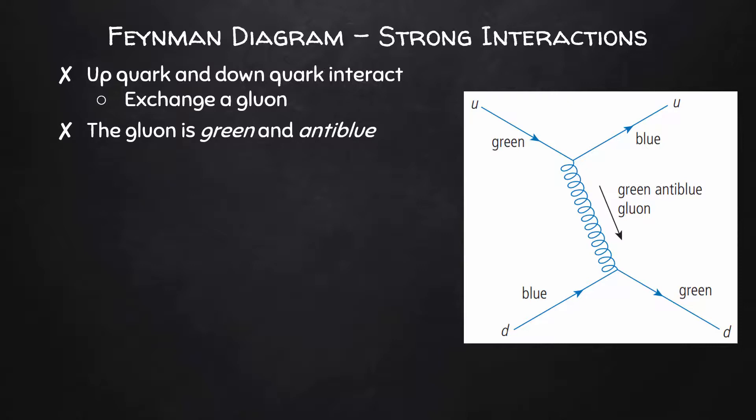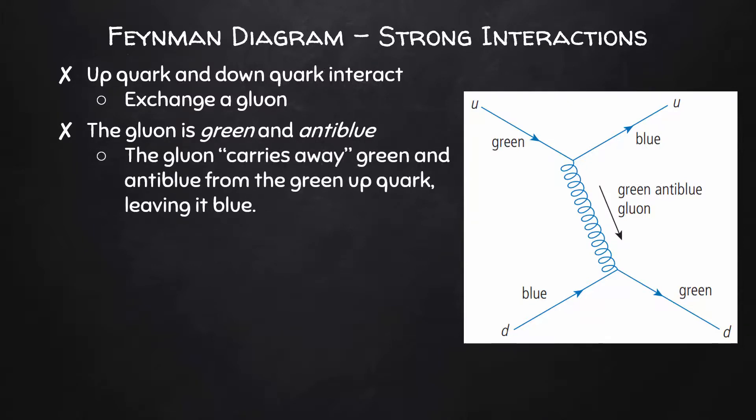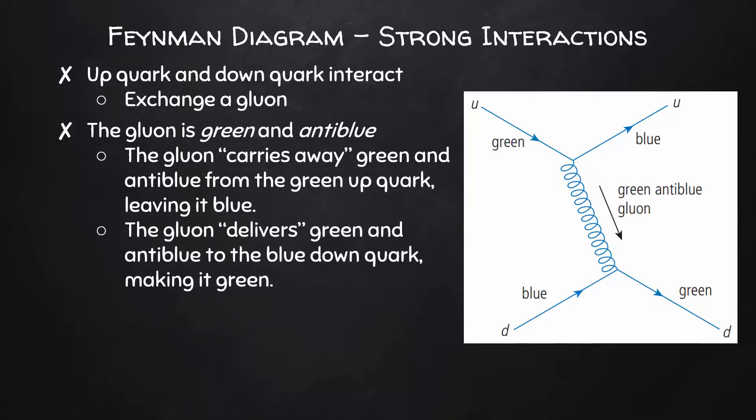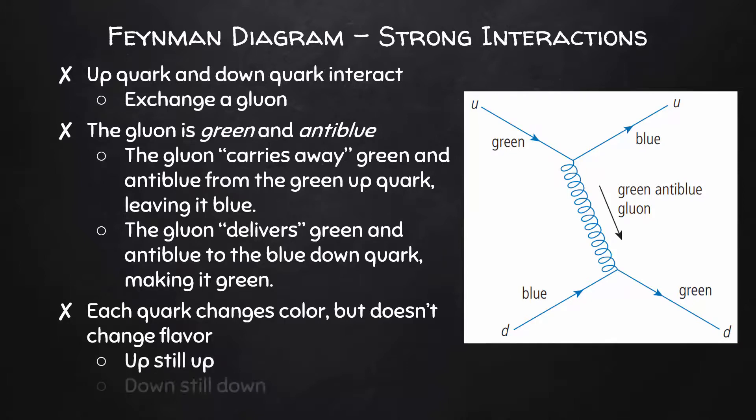The gluon in this case is green and anti-blue. When the up quark transmits the gluon, the gluon carries away the green from the up quark and also carries away anti-blue. And if you think about it, taking away anti-blue leaves blue. The same gluon delivers green to the blue down quark and also delivers anti-blue to the original blue down quark. So the blue and the anti-blue kind of cancel out and the down quark is left as green. So you can see here that each quark changes color but the flavor, the type of quark doesn't change. The up is still an up and the down is still a down. The strong force is responsible for holding the quarks together. It's not responsible for their transmutations or decays.